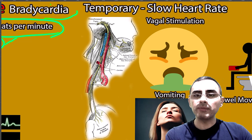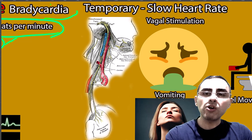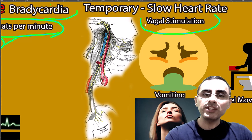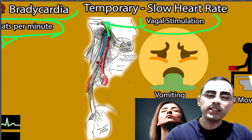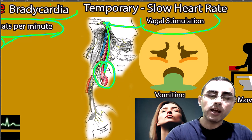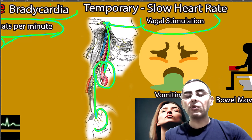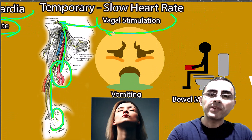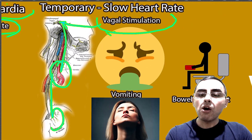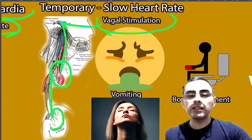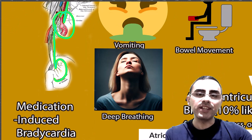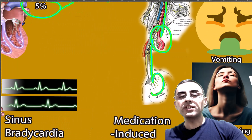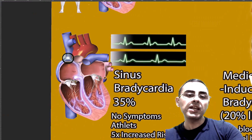The most common cause of temporary bradycardia is vagal stimulation. The vagus is a nerve which comes from the brain and innervates our heart, stomach, and different organs. During vomiting, bowel movements, or deep breathing, vagal stimulation occurs and causes a slow heart rate.